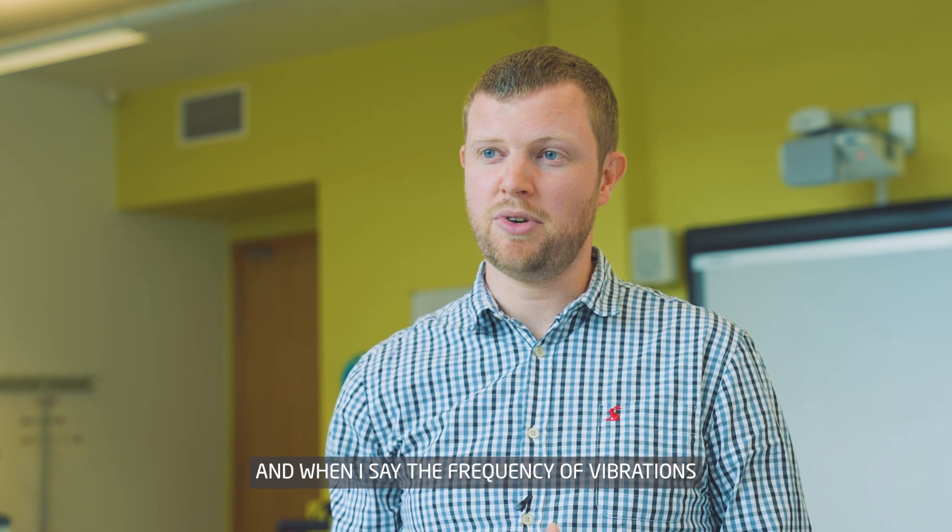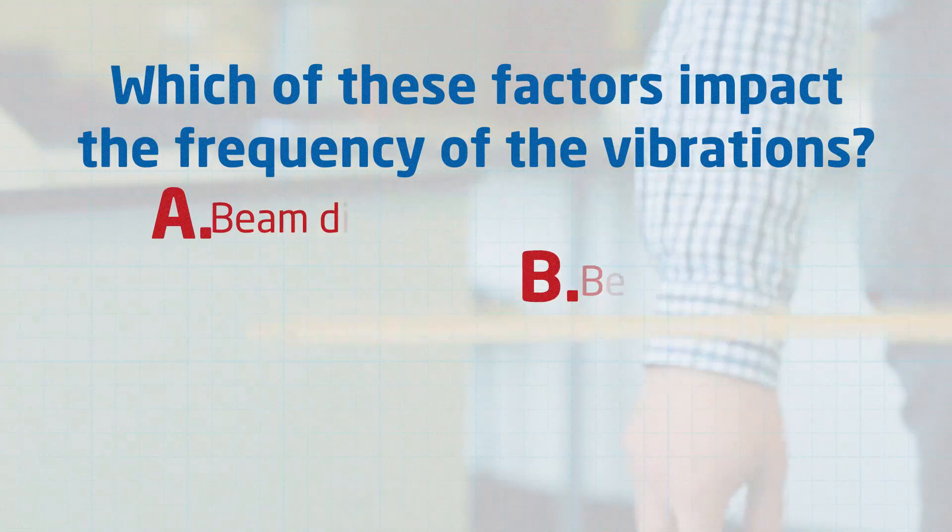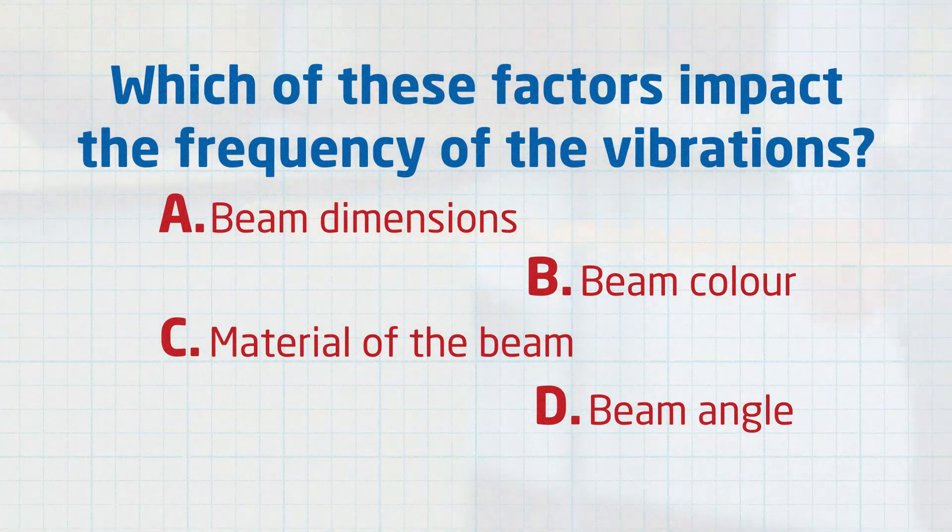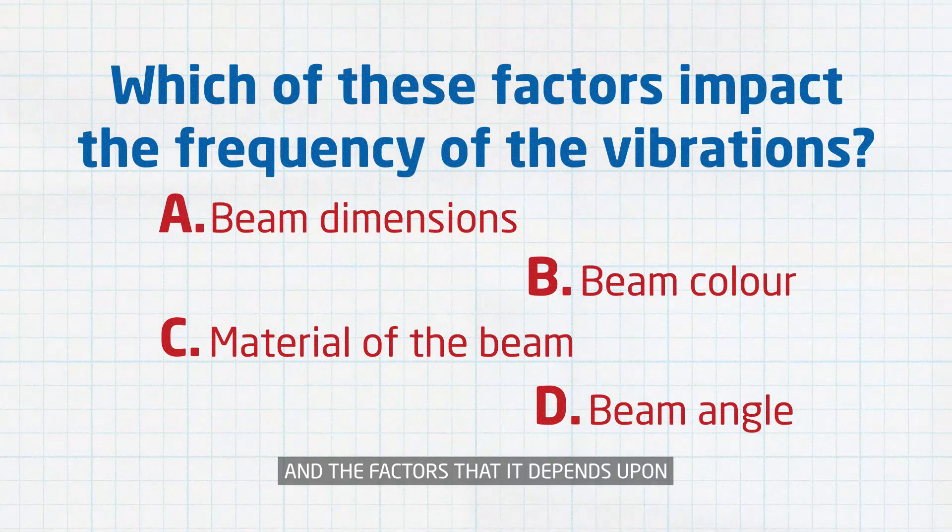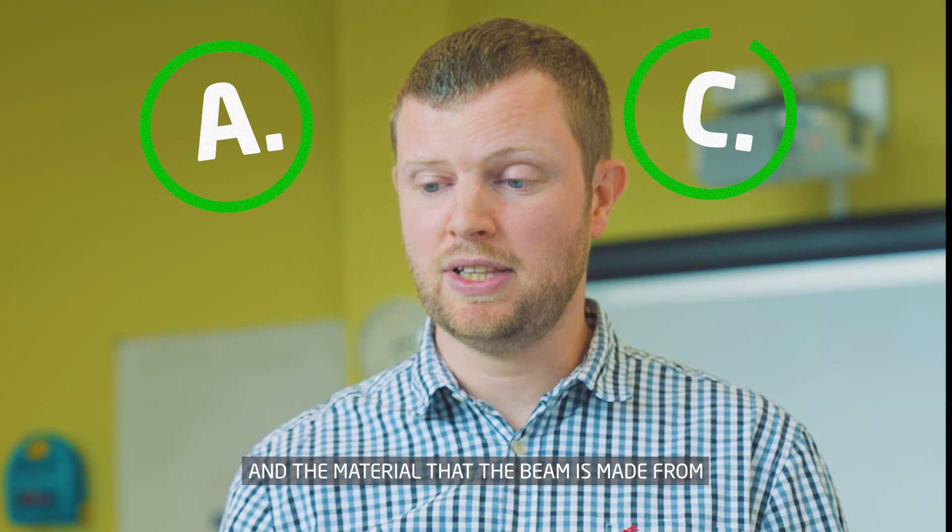Which of these factors do you think the frequency of those vibrations may depend upon? When I say the frequency of vibrations, what I mean is how many times does it oscillate up and down every second. The factors include the dimensions of the beam and the material that the beam is made from.